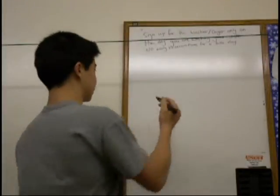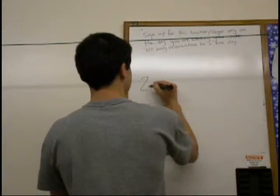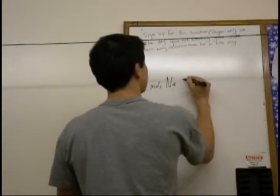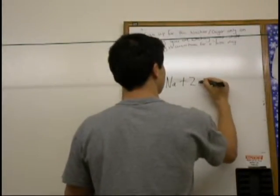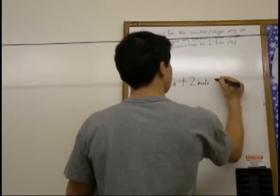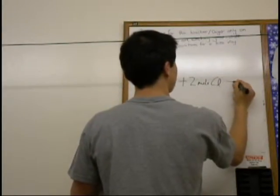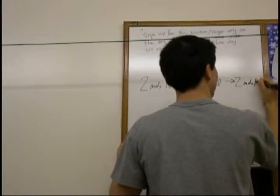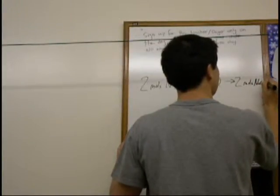And I'll give you an example. If you have two moles of Na and that reacts with two moles of Cl, then we have two moles of NaCl.